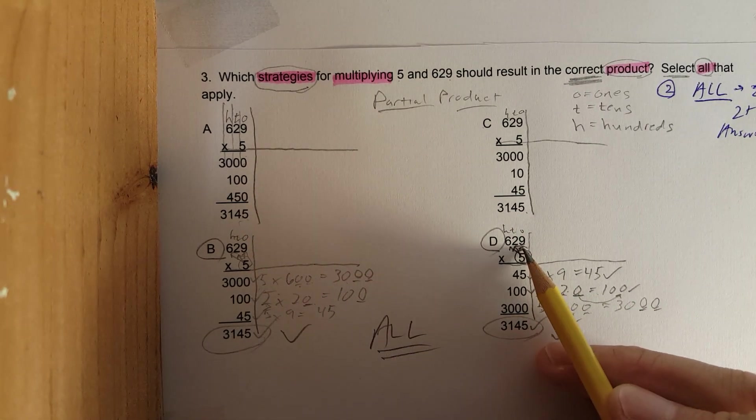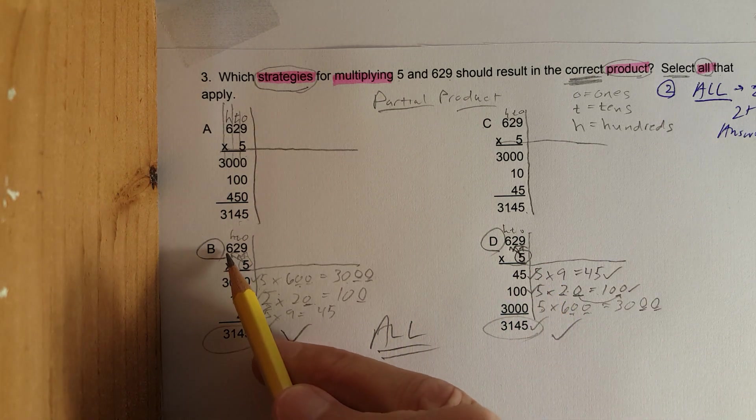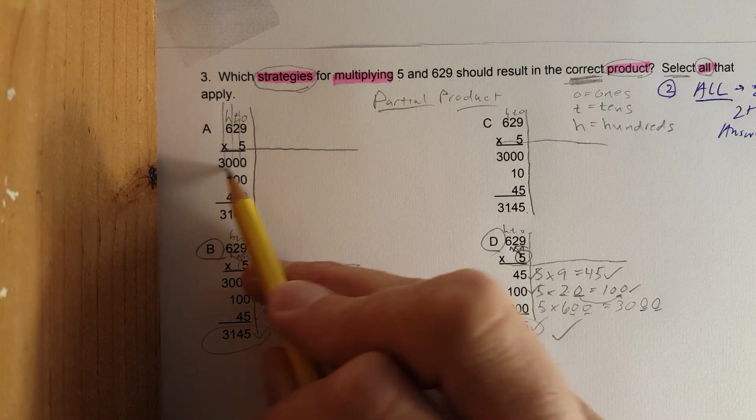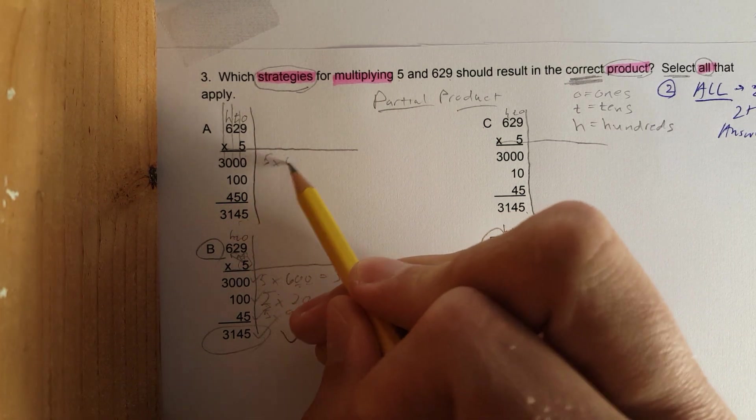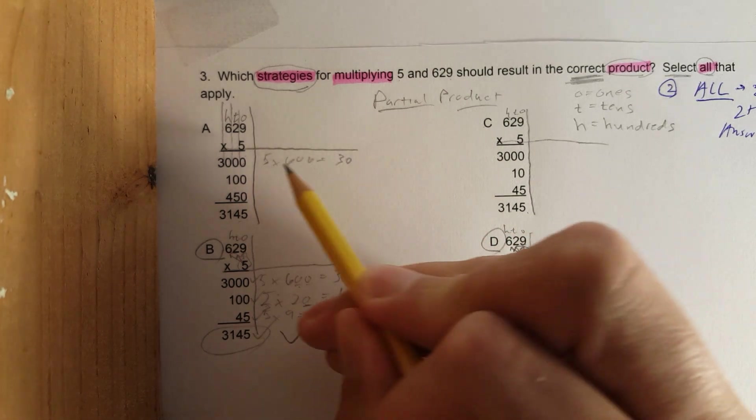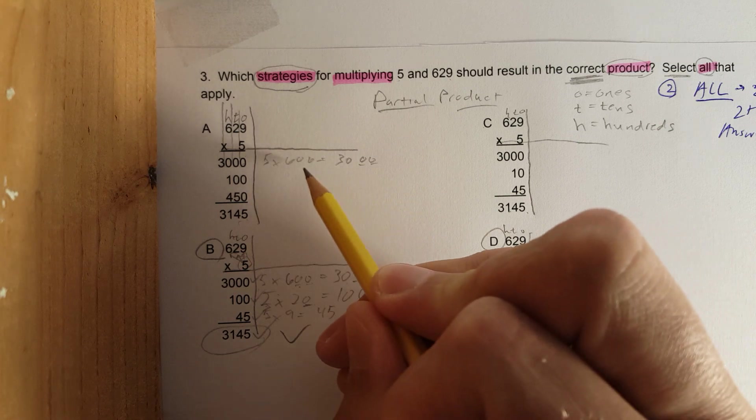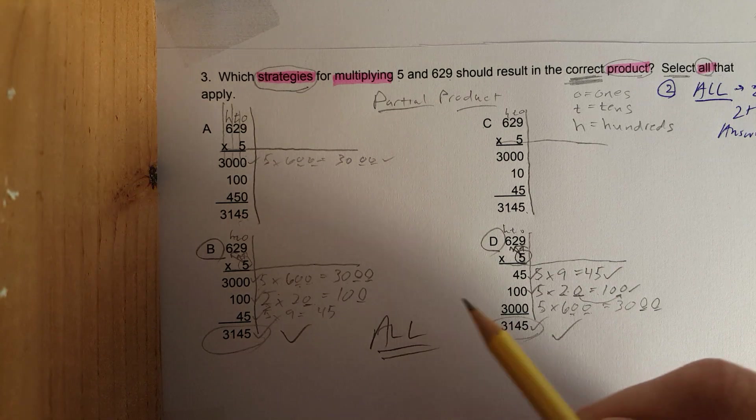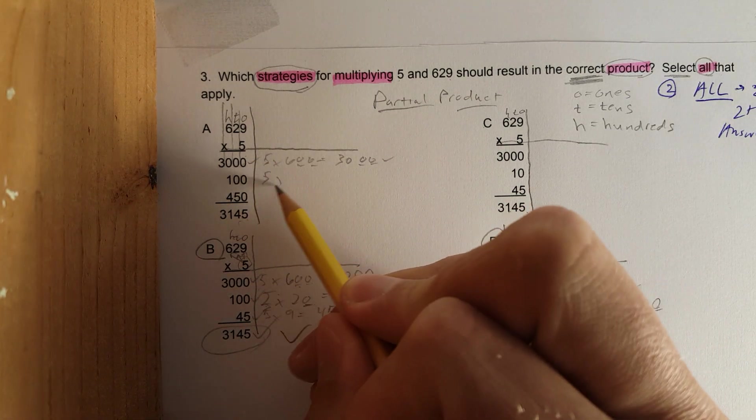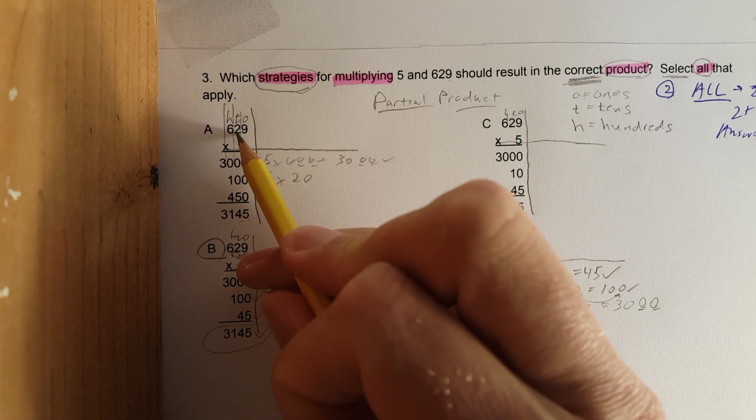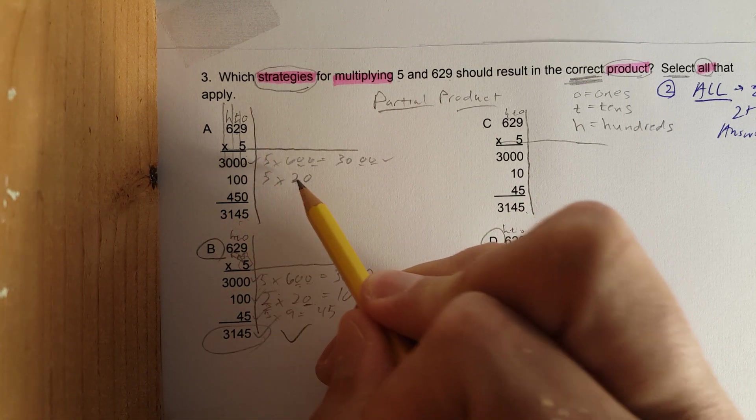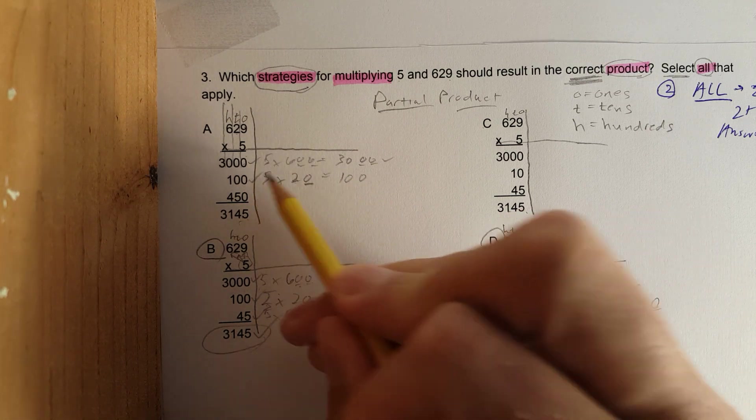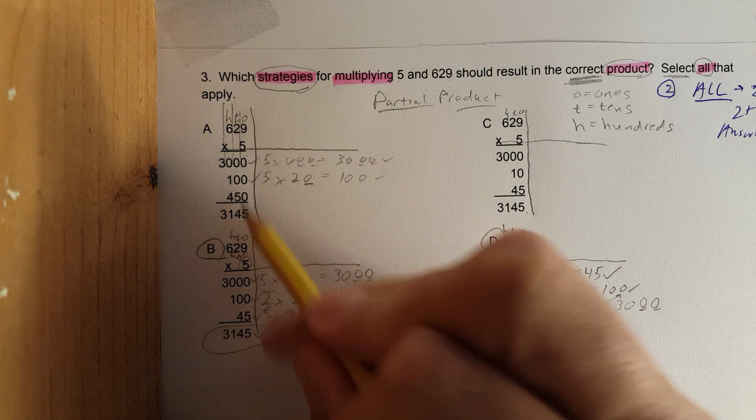So this one works, this one works. Maybe there's more because they all have the same exact answers: 3145. This one started with the ones place first, went ones, tens, hundreds. This one went backwards: hundreds, tens, ones. Let's see what's going on up here. It looks like they're starting with a bigger number, so it's going to be 5 times 600. Again, 5 times 6 is 30, I add the two zeros.